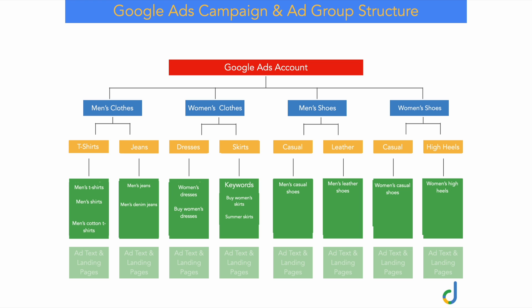Now we're actually going to go through the process of how you would set up a campaign. We're only going to be going through this process of setting up one campaign, so when you put together your whole account, you might have to replicate this another two or three times depending on how many core products or services you want to market. I do want to give a warning that I'm going to be going through this process quite quickly, but if you stay to the end of this video I'm actually going to give you a link where you can get my free Google Ads search campaign setup guide, which has screenshots of the step-by-step process.